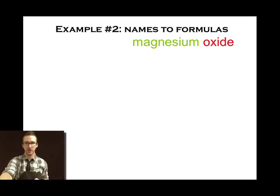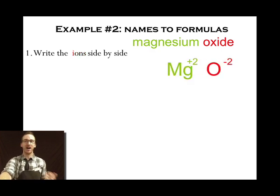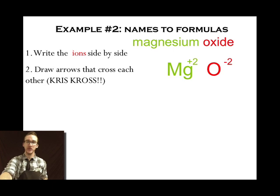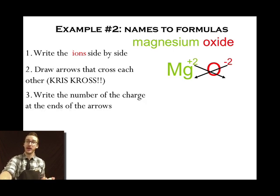Let's take a look at another example. First step. Write the ions side-by-side. Magnesium two plus oxide two minus. Step two. Draw arrows that criss-cross. Step three. Write the number of the charge at the end of the arrow.